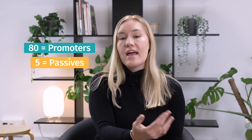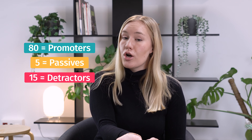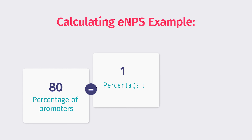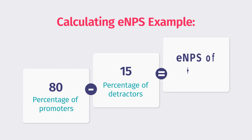Let's say you have 100 employees: 80 are promoters, 5 are passives, and 15 are detractors. In this case, the calculation would be 80 minus 15, giving you an eNPS of positive 65.